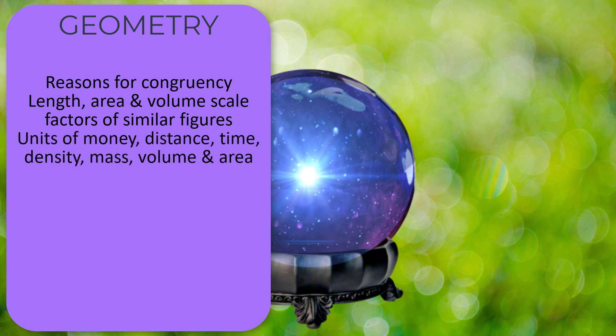And then we've got units of money, distance, time, density, mass, volume, and area. There's quite a lot in there. It won't be all of it. That's just like the topic heading. So I see density, mass, and volume is mentioned on the foundation paper. So probably it's going to be that one that's going to appear. So density equals mass divided by volume. So given two of those things, you should be able to find the other one.